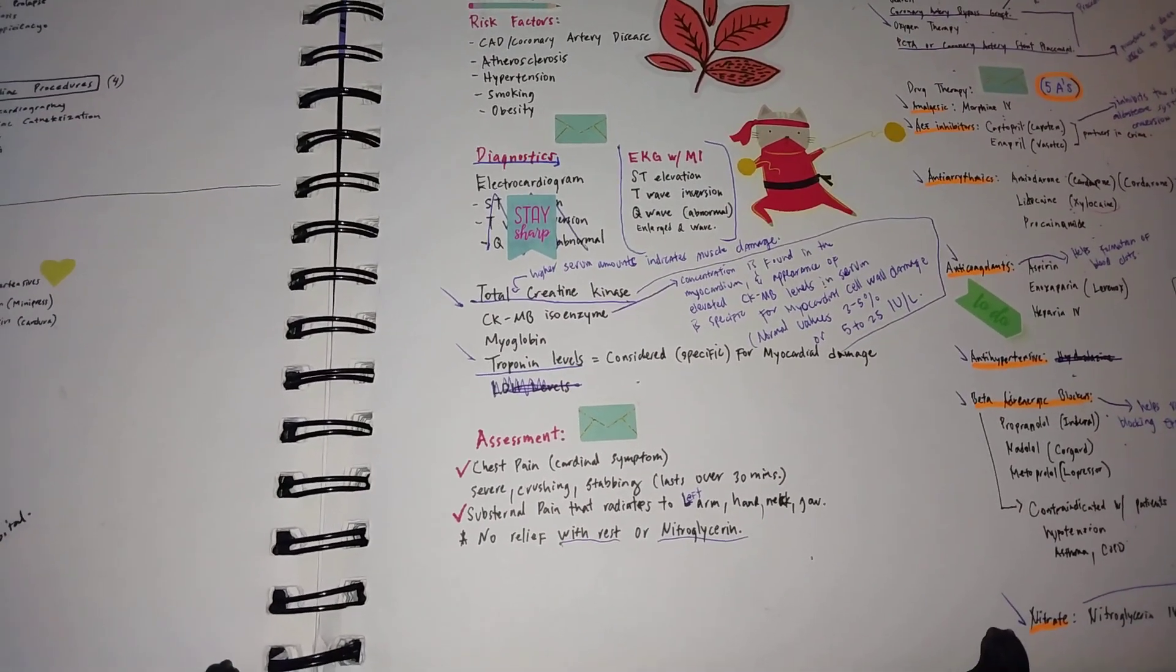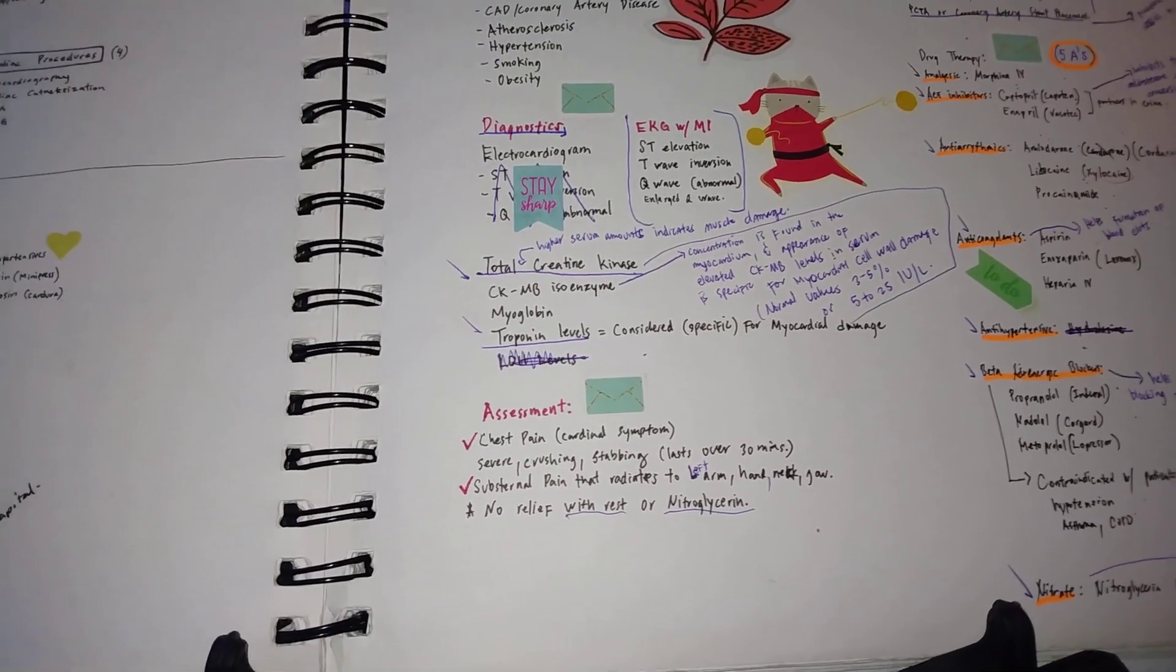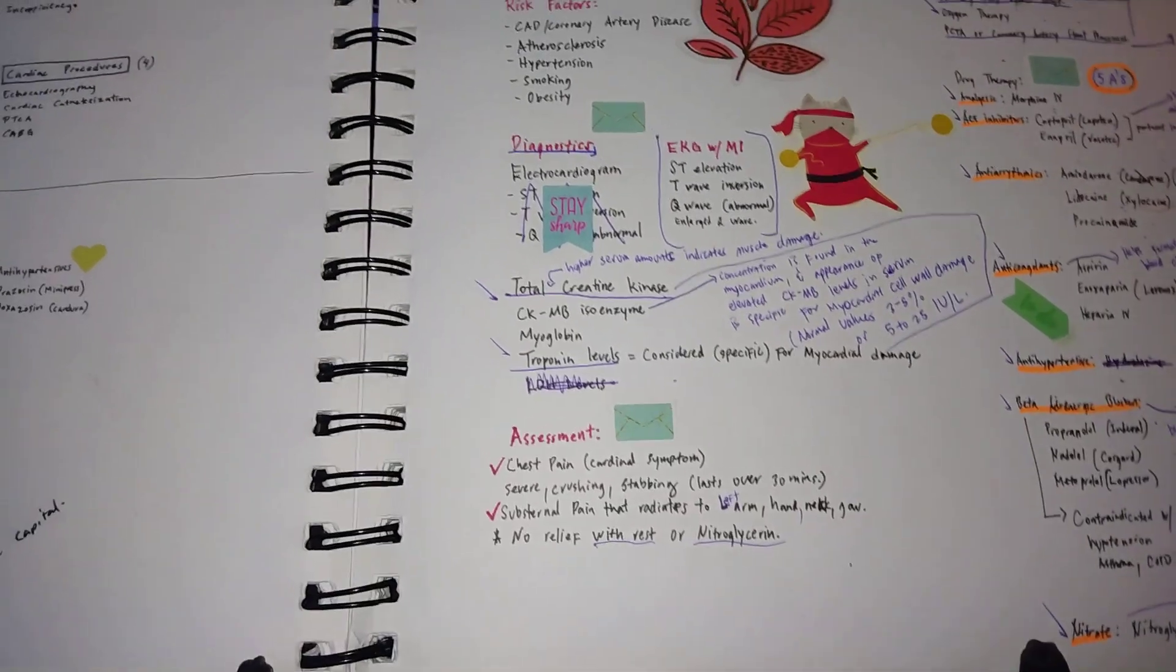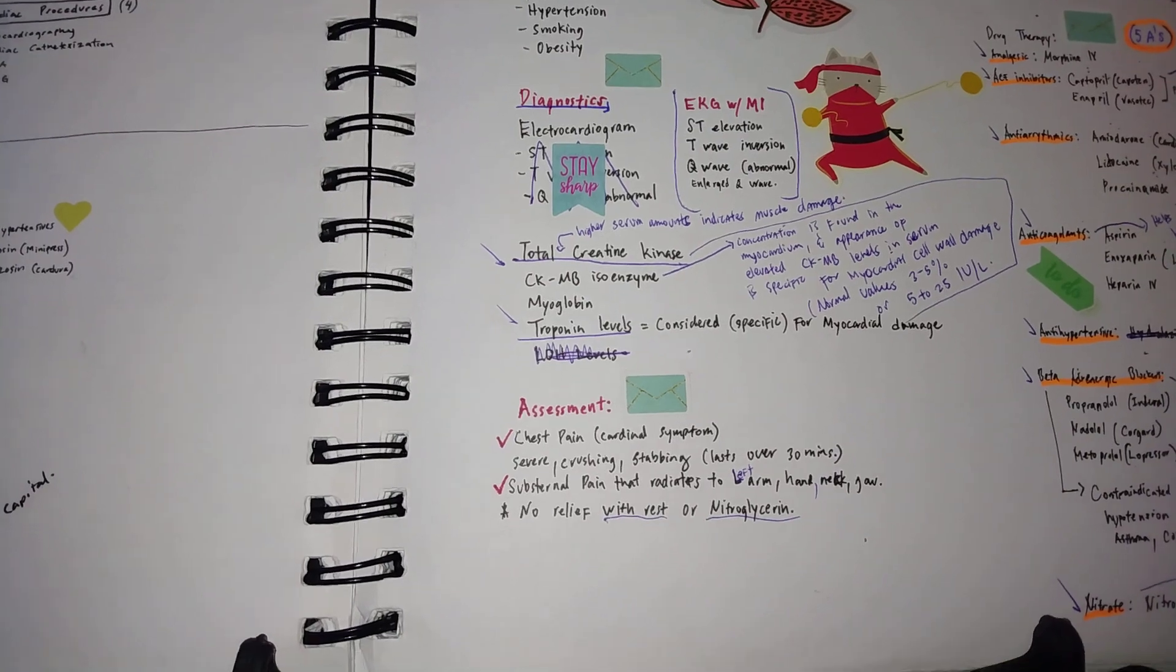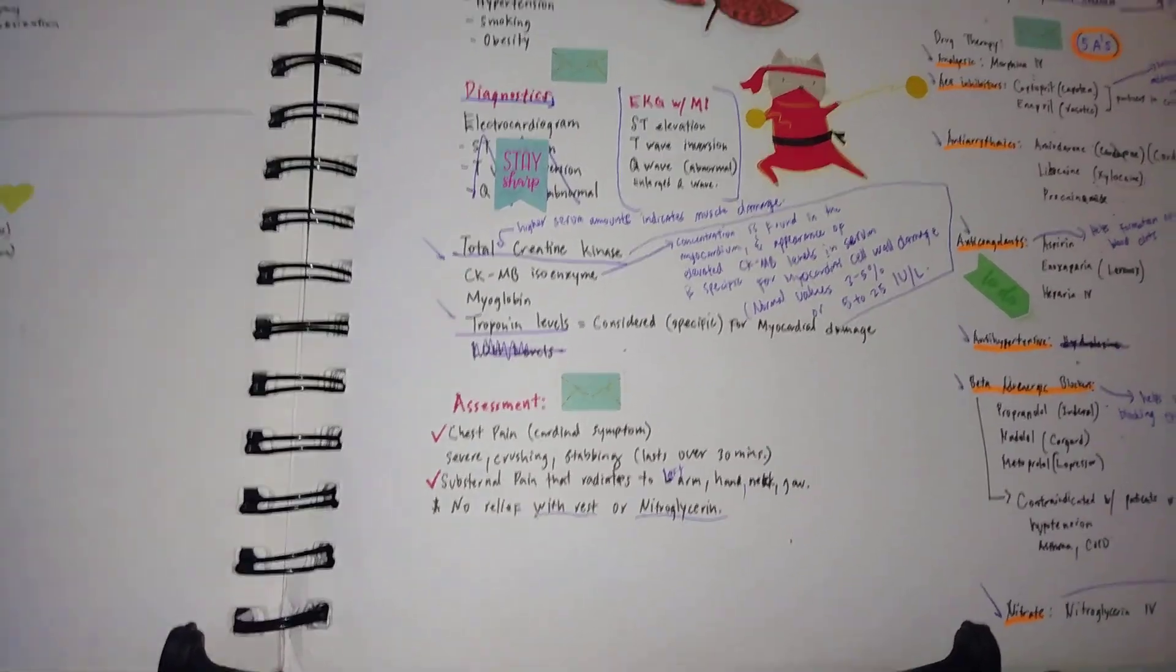There's going to be a severe crushing, stabbing chest pain that can last over 30 minutes. Of course, there would be some sternal pain that can radiate to the left arm or the hand, the neck, or the jaw. With a patient with MI, there is no relief with rest or when the patient is given nitroglycerin.